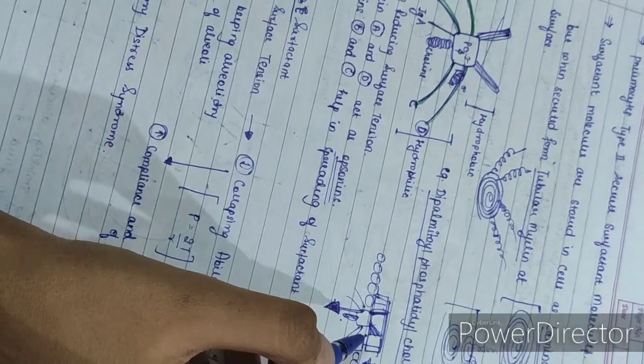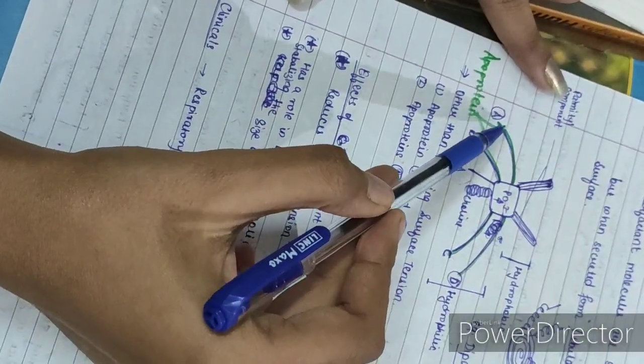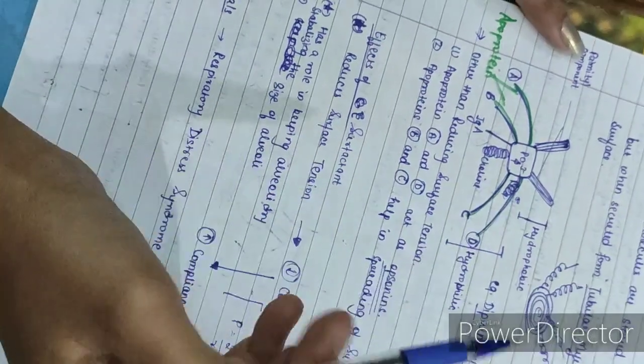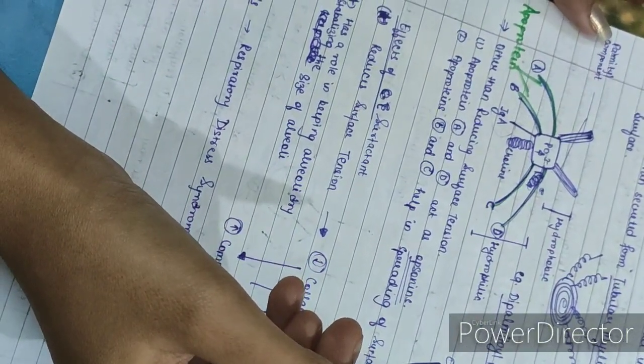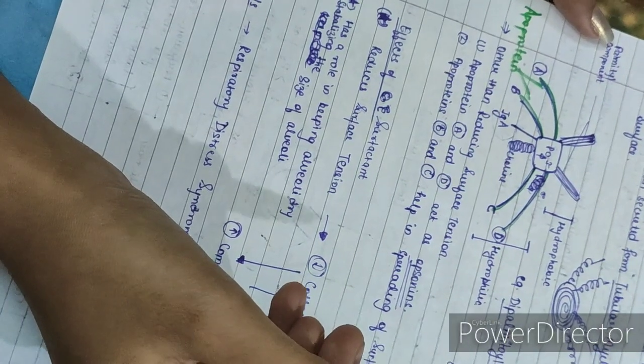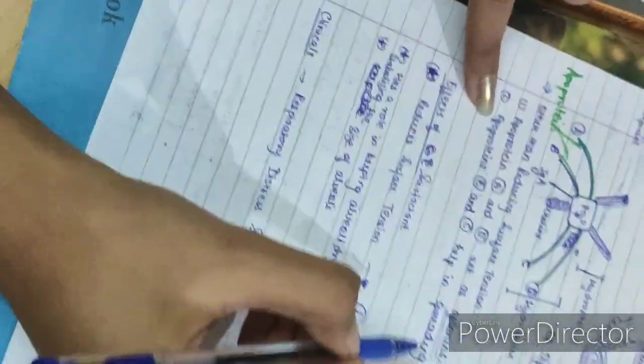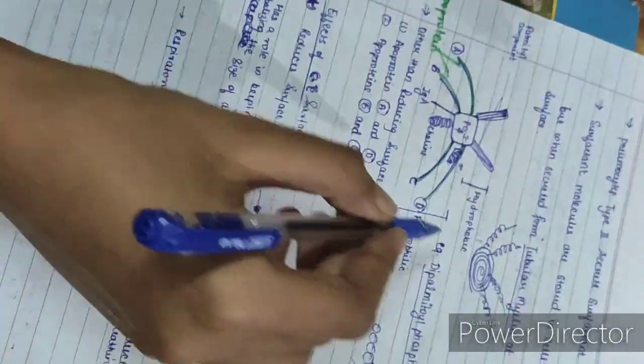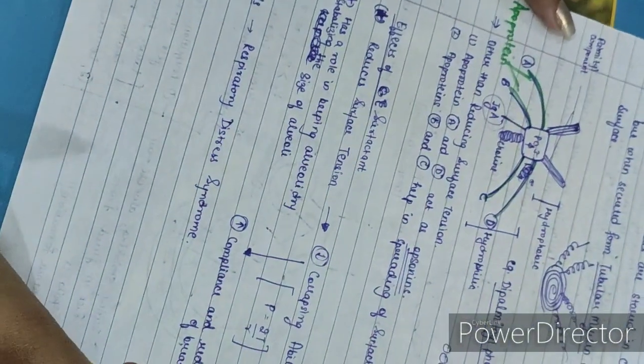What are the other functions of the surfactant molecule? First of all, apoprotein A or apoprotein D, they act as opsonins. As a result, macrophages, alveolar macrophages which are also called as the dust cells, they will help to phagocytose. Now apoprotein B and C, these help in spreading of the surfactant over the entire alveolar surface. These are the immunological functions.